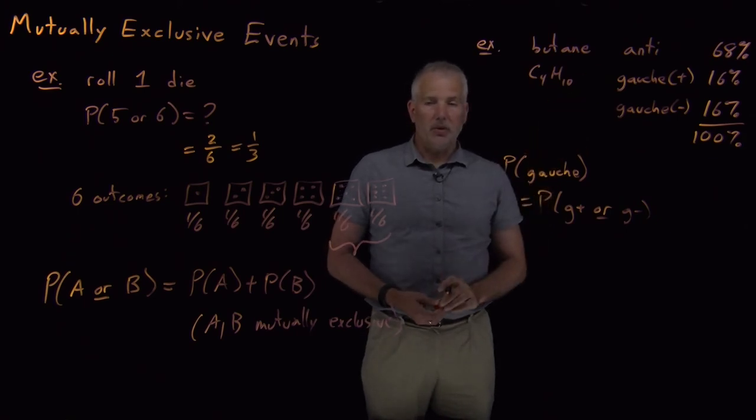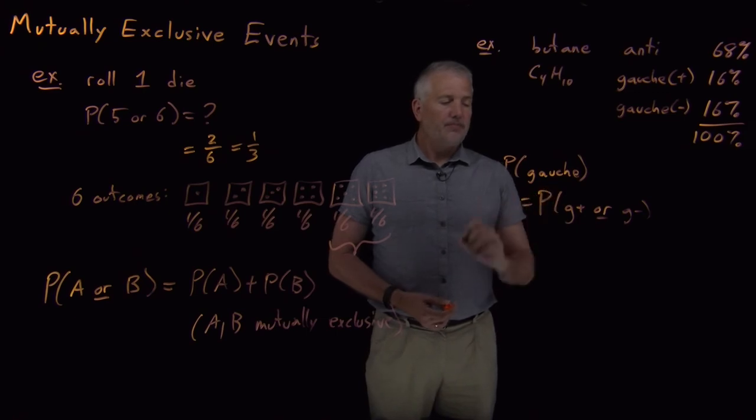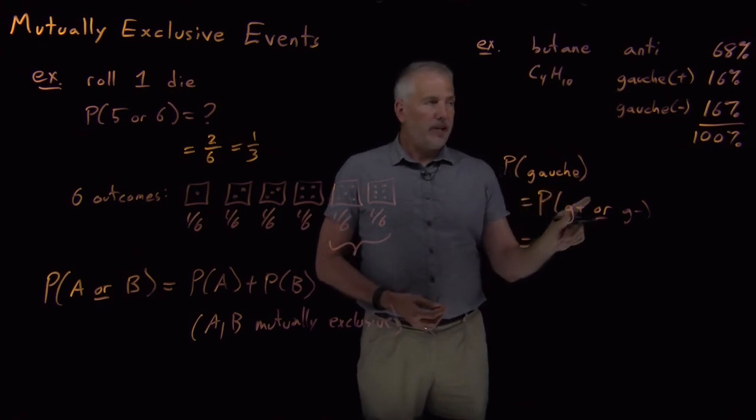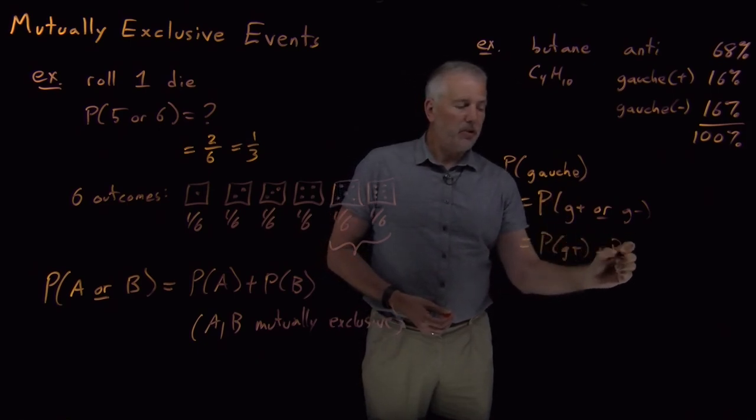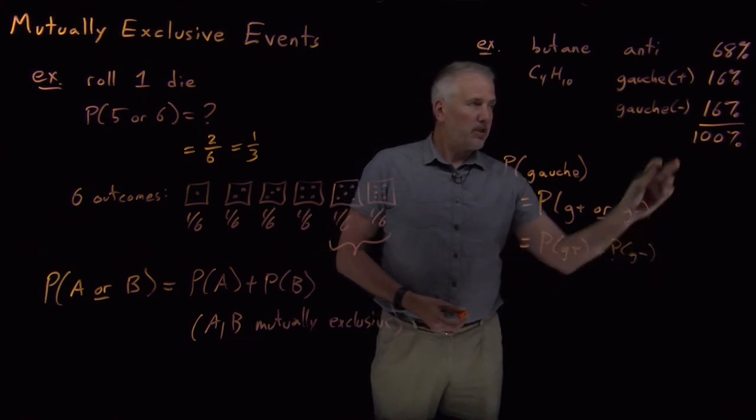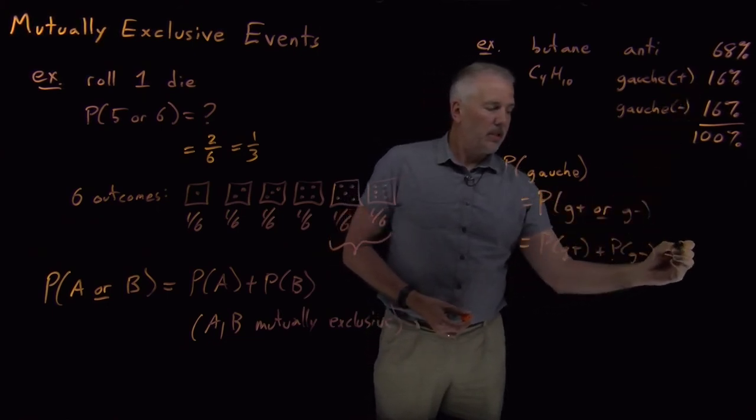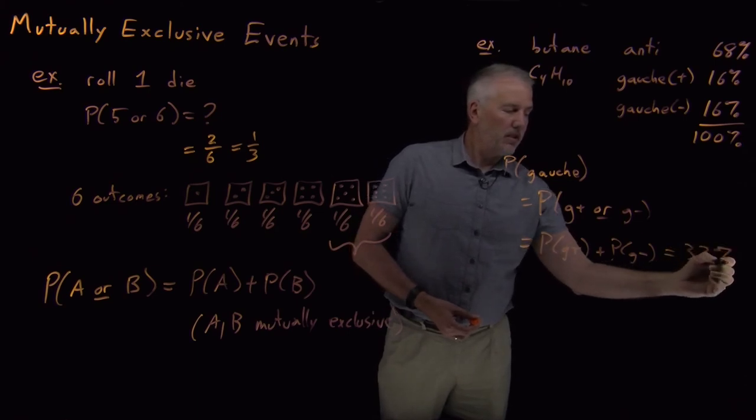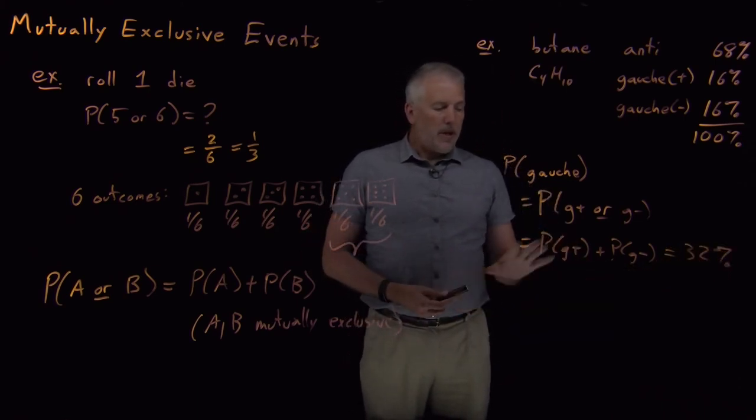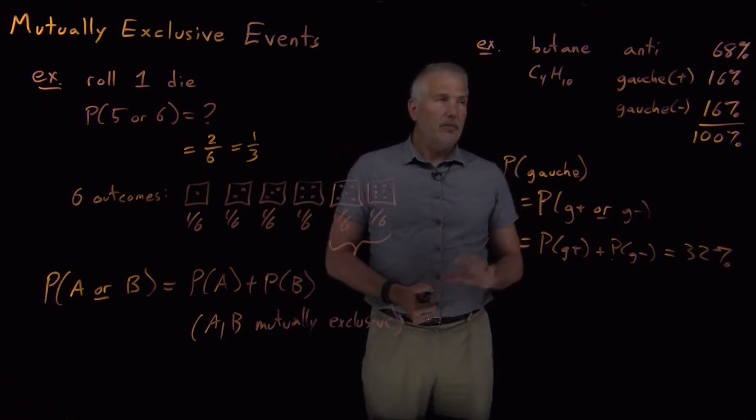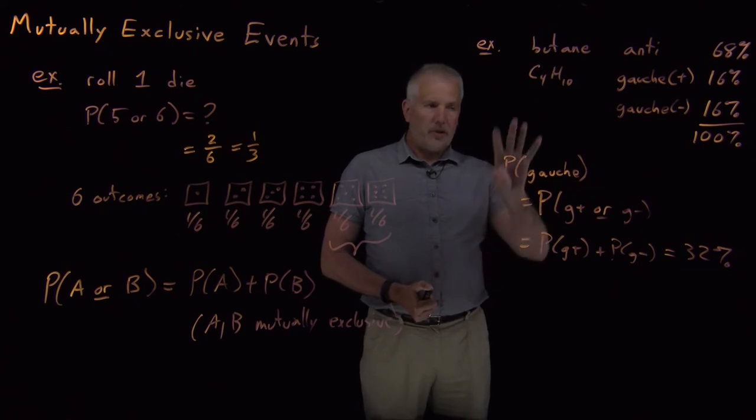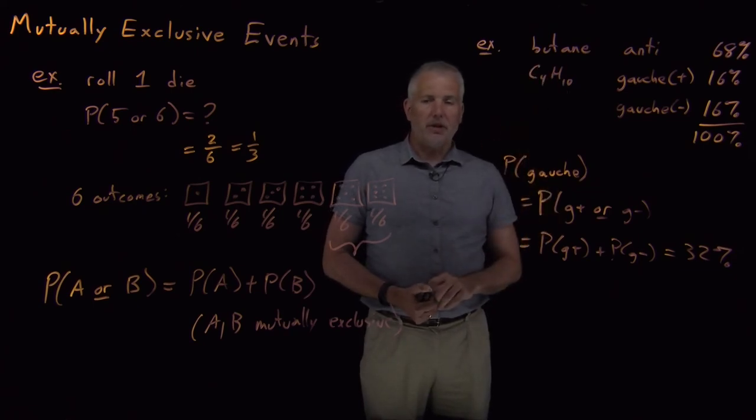Those probabilities exclude each other. They're mutually exclusive. So the way we can find out the probability that's either this or this is by adding those two things together. Probability of gauche plus and probability of gauche minus combined. So 16% and 16% gives us 32%. Mathematically, just as easy as the example with rolling a die, but one step slightly more confusing because it's talking about chemistry instead of talking about simple numbers like rolling dice.